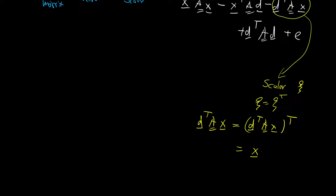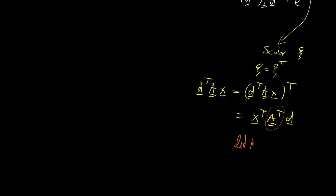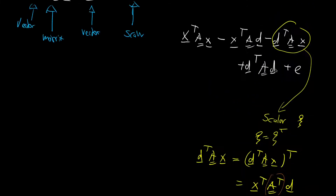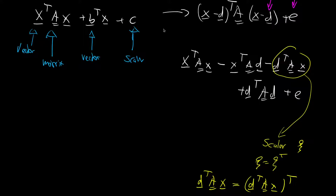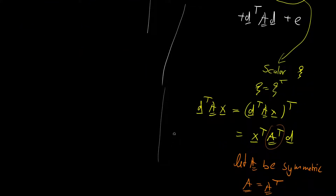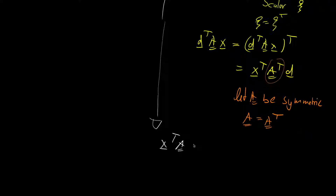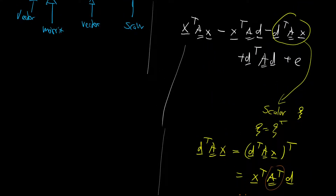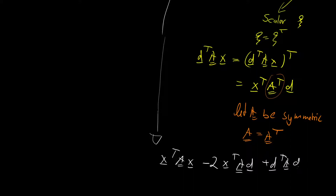Applying the transposition rules, the order changes: we get x transposed A transposed d. Now we enforce A to be symmetric, meaning A equals A transposed. Under this assumption, d transposed A x equals x transposed A d, and in total we get x transposed A x minus 2 times x transposed A d plus d transposed A d plus e.